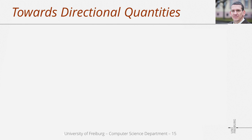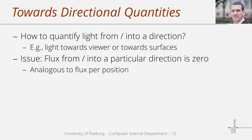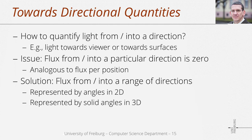Irradiance and radiosity do not encode any information on the direction of flux. Irradiance is useful to specify the illumination strength of a surface, but it cannot be used to specify the amount of light transported along a ray with a certain direction. So we now turn towards a radiometric quantity that can quantify light transport along a ray with a certain direction. We face an issue similar to flux per position: the flux into a particular direction is zero. That is why we consider flux into a range of directions. In 3D, a range of directions can be characterized with a solid angle.